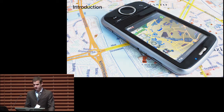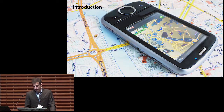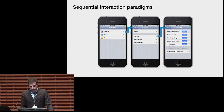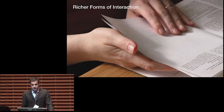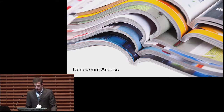For reasons of portability, mobile devices have displays that are limited in size and constrained by weight. Despite increases in resolution, such size restrictions have resulted in sequential interaction paradigms in which applications are accessed one by one. By contrast, paper offers richer forms of interaction, allowing documents to be navigated and organized more efficiently. The display size of paper documents can also be modulated easily through folding, tearing, or combining multiple page elements.